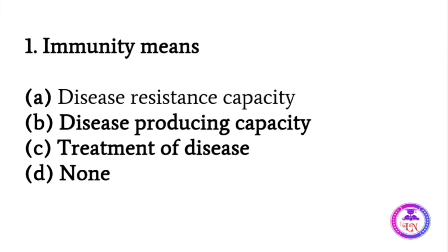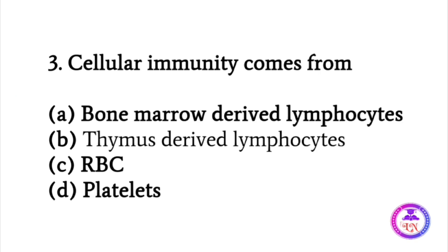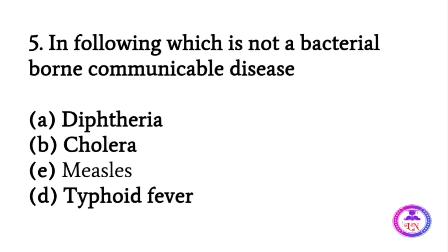Immunity means the resistance of disease capacity. Humoral immunity comes from the bone marrow derived lymphocytes. Cellular immunity comes from the thymus derived lymphocytes. The humoral immunity is based on the production of antibodies.